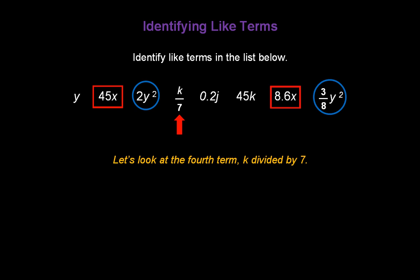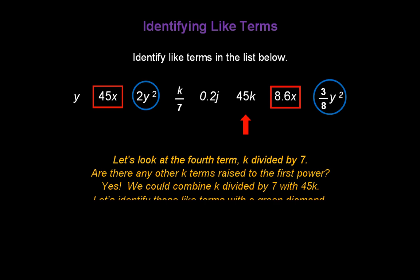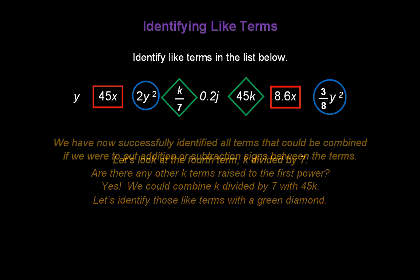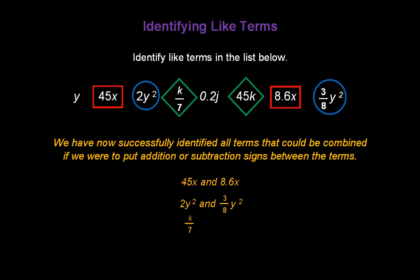Let's look at the fourth term, k divided by 7. Are there any other k terms raised to the first power? There's a j term, so that won't work — but there's another k to the first. So we could combine k divided by 7 with 45k. Let's identify those like terms with a green diamond. We've now successfully identified all terms that could be combined: 45x and 8.6x, 2y squared and 3/8 y squared, and k divided by 7 and 45k.